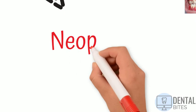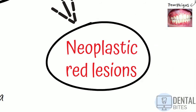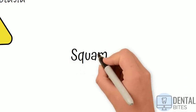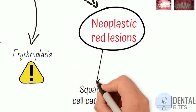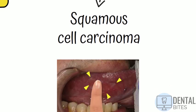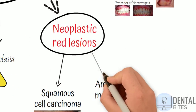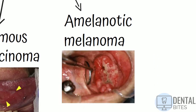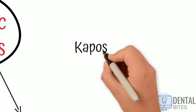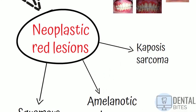Moving on to neoplasms — our first example is squamous cell carcinoma, which can present as red lesions as well as white. Next we have amelanotic melanoma. And thirdly Kaposi's sarcoma, which is a tumour caused by human herpesvirus 8 and can have a red, blue or purple appearance.